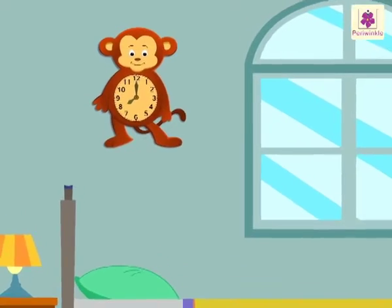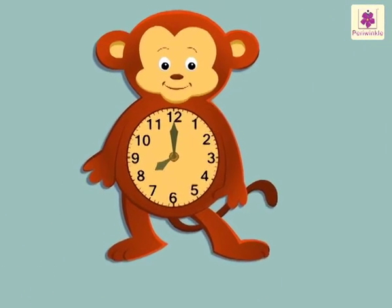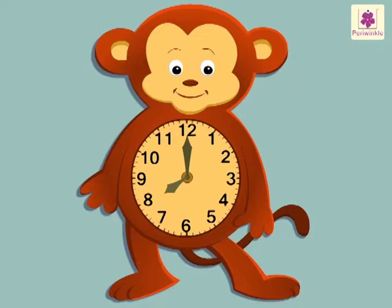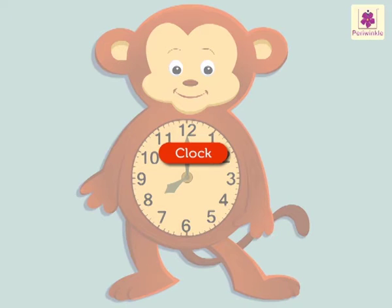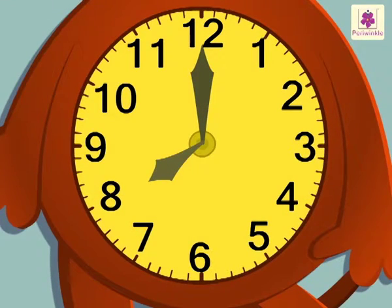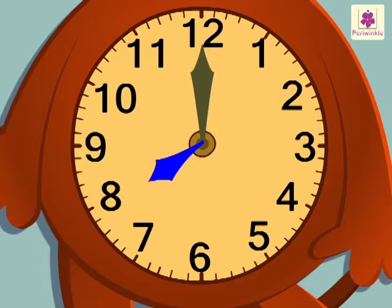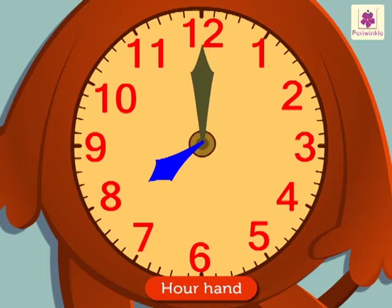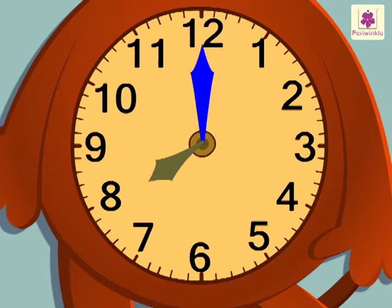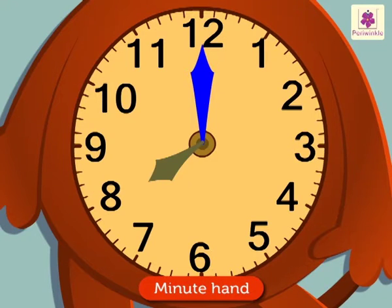Let's revise what we have learned about the clock. The flat surface of the clock is called its face. It has two hands — one hand is short and the other is long. The short hand is also called the hour hand and it shows the hour. The long hand is also called the minute hand and it shows the minutes.